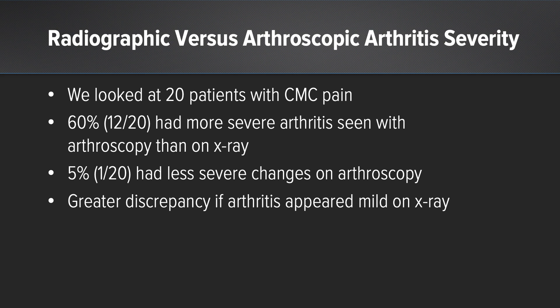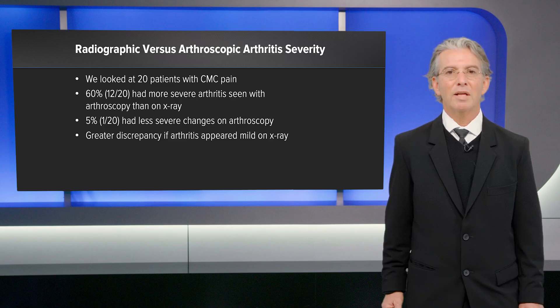thus concluding that there is a greater discrepancy of arthritis when x-rays appear to be mild or moderate. In short, x-rays don't always correspond with the arthroscopic findings.